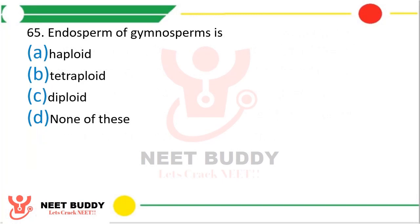Question number 65. Endosperm of gymnosperms is: haploid, tetraploid, diploid, or none of these? The correct answer is option A, that is haploid.